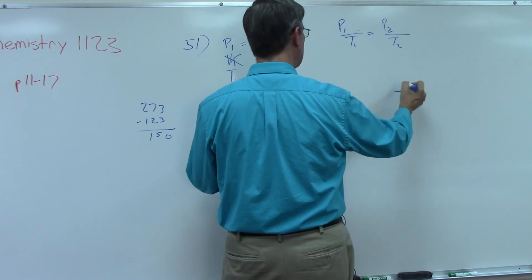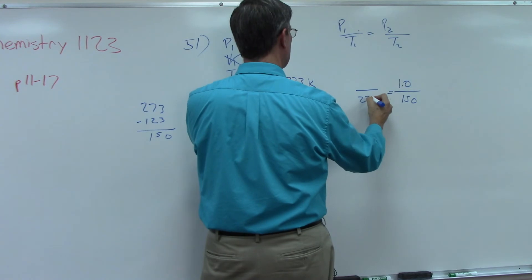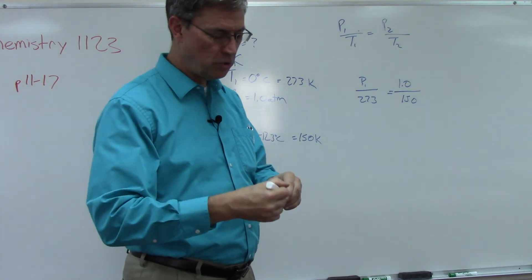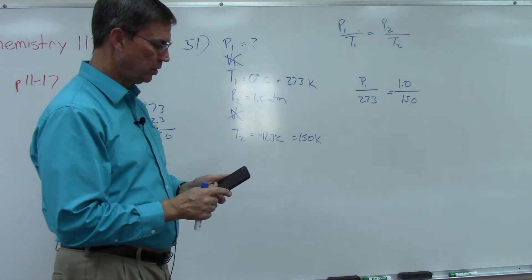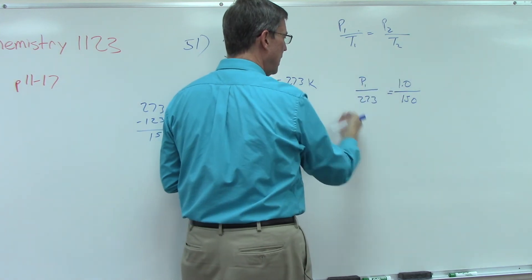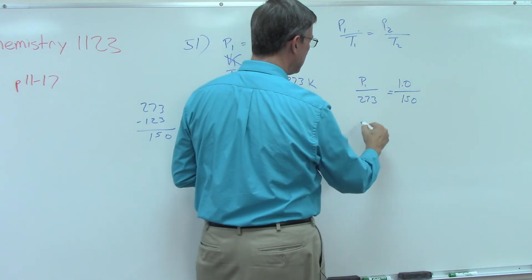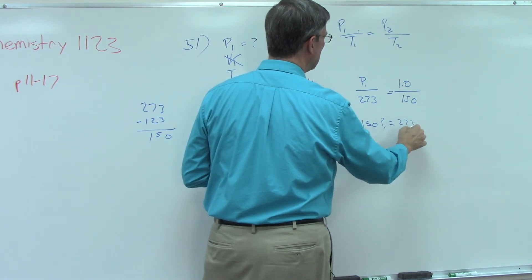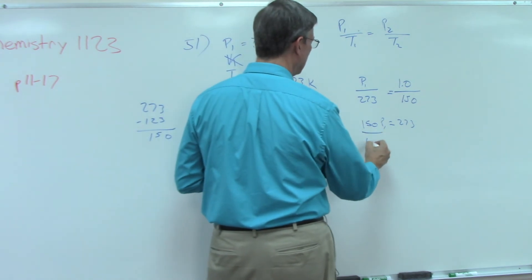Alright, so let's plug these in. T2 is 150, p2 is 1.0, t1 is 273, and p1 is what we don't know. Now do you remember from math classes that you've had with me, how do we solve when we have a ratio? Cross multiply, okay, and then divide by this side. Or you want to think of it this way, the cross products are equal. So 150 p1 equals 273 times 1 which is 273, and then the last step would be divide by 150.